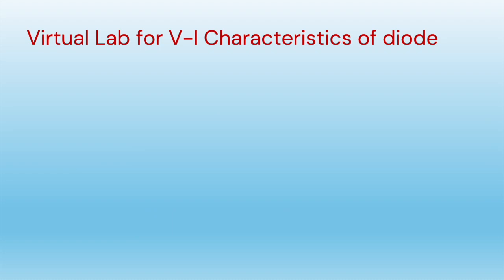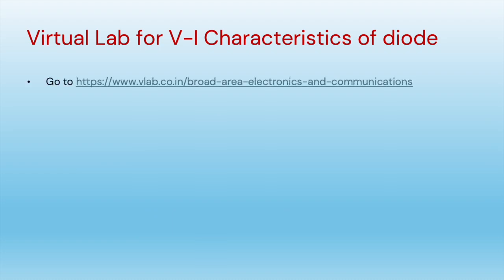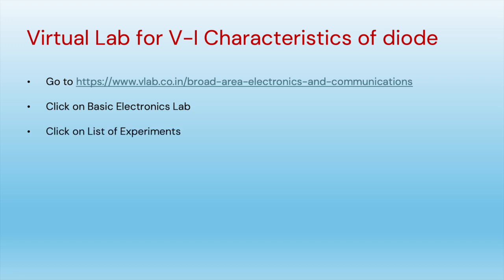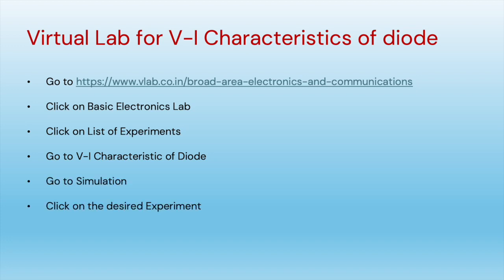We have performed the experiment in the physical lab. Now we will perform the same experiment in the virtual lab. We go to the virtual lab address, click on basic electronics lab, then click on the list of experiments and go to VI characteristics of diode. We click on simulation, select the desired experiment from the list, and start the simulation.